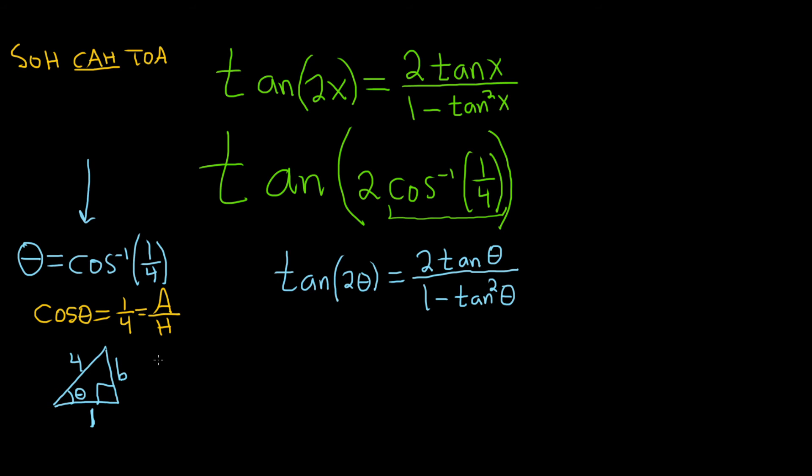So then we can use the theorem of Pythagoras. It says the hypotenuse squared is equal to the sum of the other sides squared. So 16 is equal to B squared plus 1.